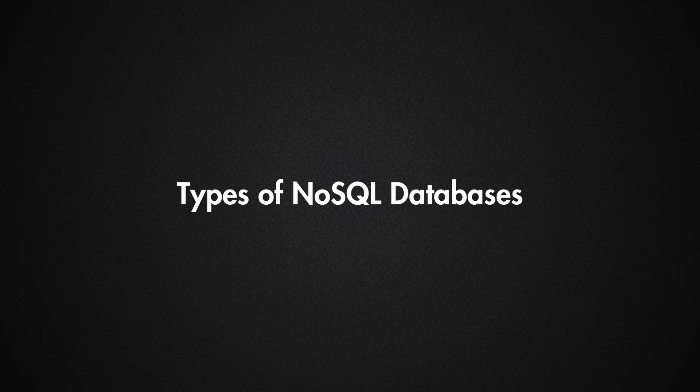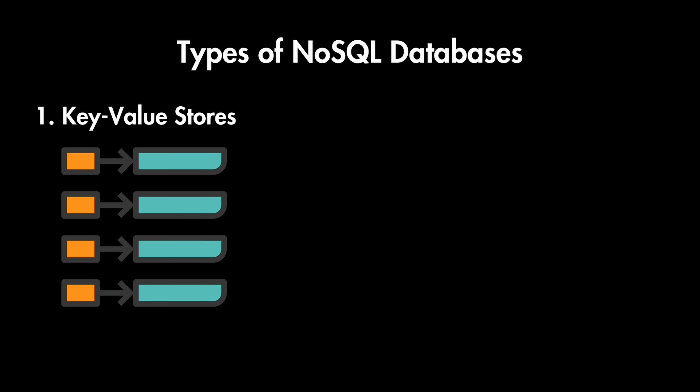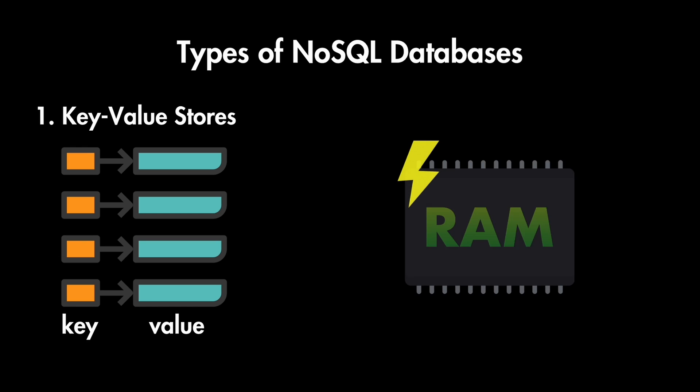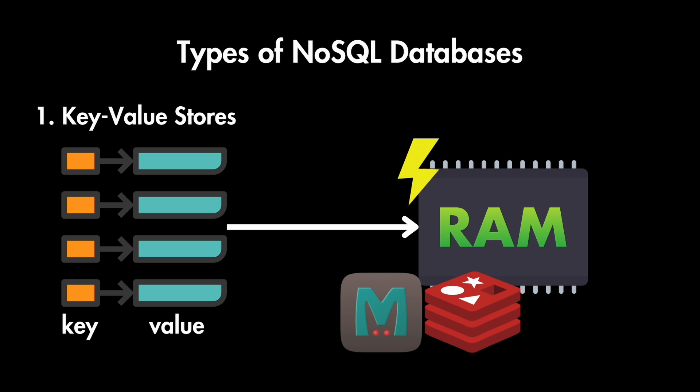Now let's look at the different types of NoSQL databases. The first type is key-value stores. Data is stored as simple key-value pairs, like a giant hash map or dictionary — pairs of unique keys and associated values. The value can be a simple string, a complex data structure, or even blobs of data. The biggest advantage of key-value stores is their simplicity and speed. Since they primarily reside in RAM, lookups are extremely fast. Some examples are Redis and Memcached.